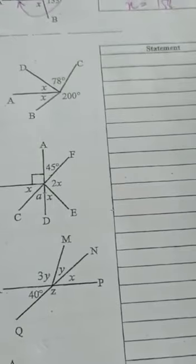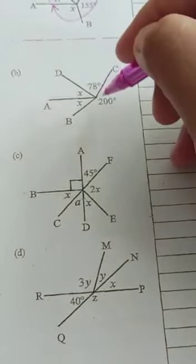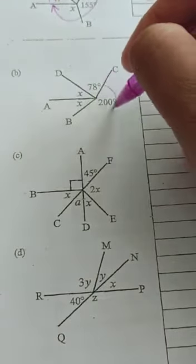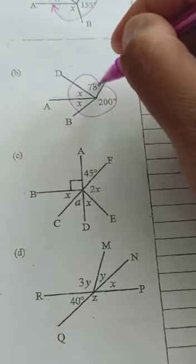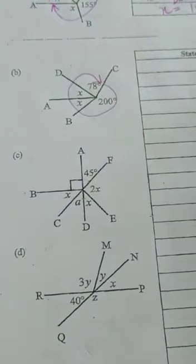Next one, B, we can see that 200 plus x plus x plus 78 adds up to 360. It's a revolution. So you're going to have 200 plus x plus x plus 78 equals 360, and the reason there is revolution.